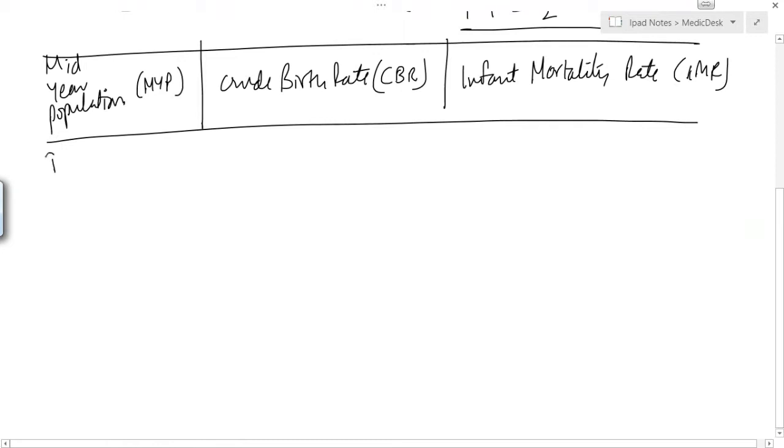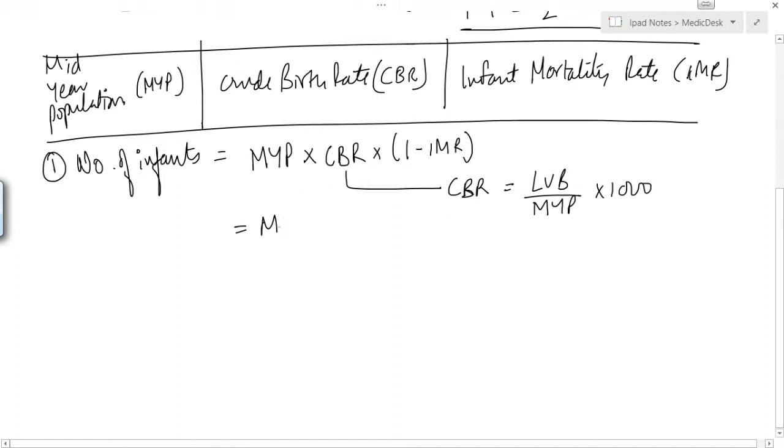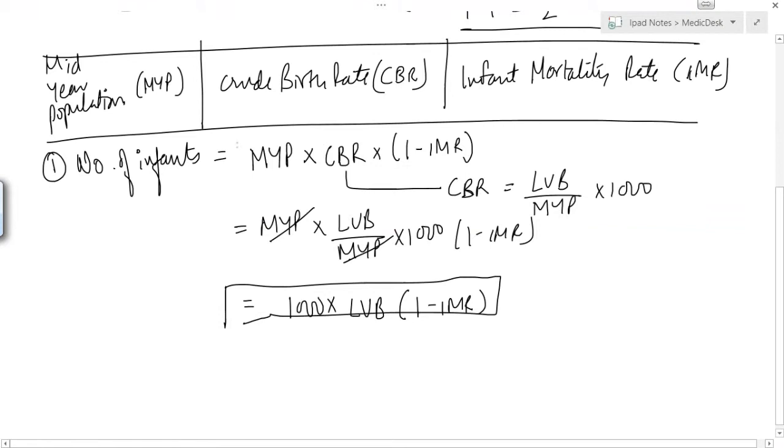So out of this, 3 values would be given in the question itself. And now we will find the number of infants by using mid-year population into crude birth rate into 1 minus infant mortality rate. Now remember that the crude birth rate is equal to live births upon mid-year population into 1000. So if we replace this, then we have 1000 into live birth into 1 minus IMR.